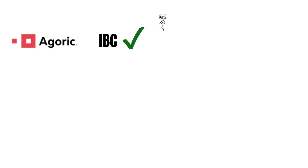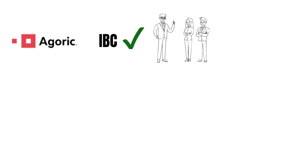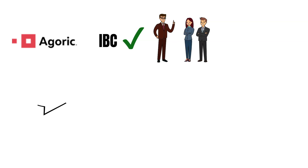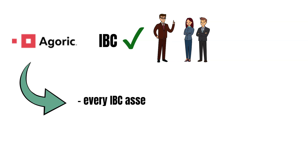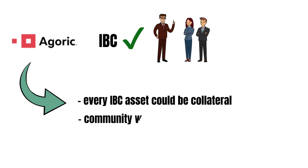The advantage of the Inter Protocol over MakerDAO, for example, is that Agoric is IBC-enabled. IBC is a communication standard of Cosmos that blockchains can use to communicate with each other. That said, every IBC asset could theoretically be used to collateralize an IST loan, but only whitelisted assets will be allowed as collateral on the Inter Protocol. The BLD holders decide which assets will be whitelisted and allowed as collateral.